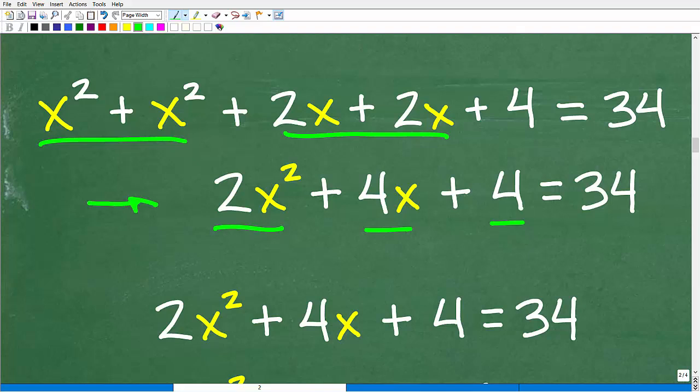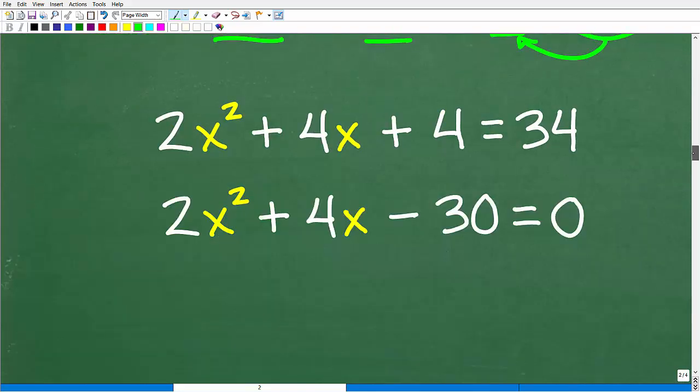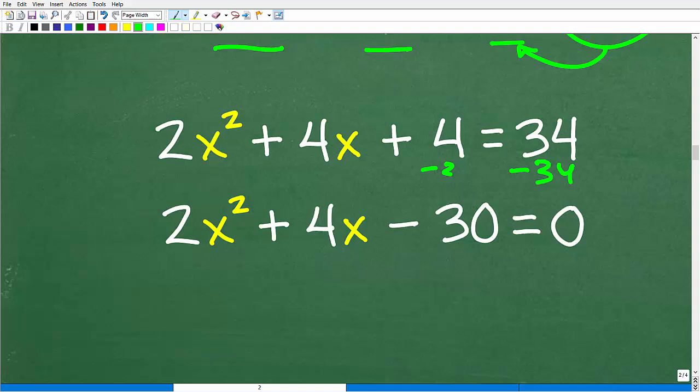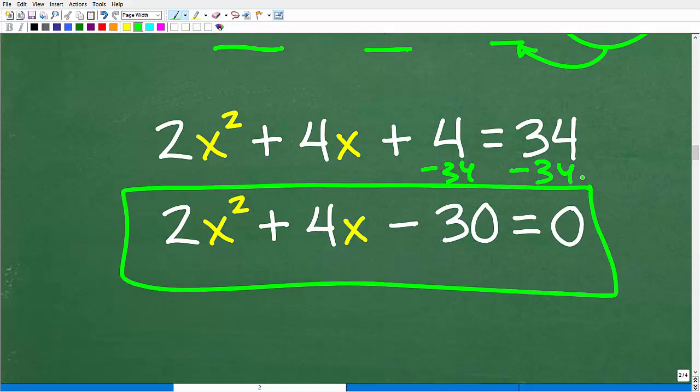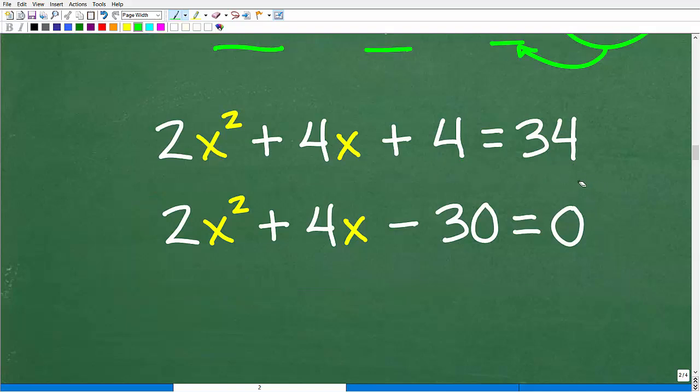All right, now we have this quadratic equation. So, what we want to do is set it equal to 0. So, we're going to subtract this 34 from both sides and move this over here. Okay, so when we do this, again, I want to subtract 34 from both sides of the equation. So, 4 plus a negative 34 is negative 30. All right, now, at this point, if some of you are, you know, a little bit overwhelmed with this algebra, let me go ahead and make a recommendation right now. Check out my Algebra 1 or Algebra 2 courses. You can find links to those in the description of this video. Also, I have a ton of additional videos on all these topics on my YouTube channel. All right, so here we go. We are down to 2x squared plus 4x minus 30 is equal to 0.